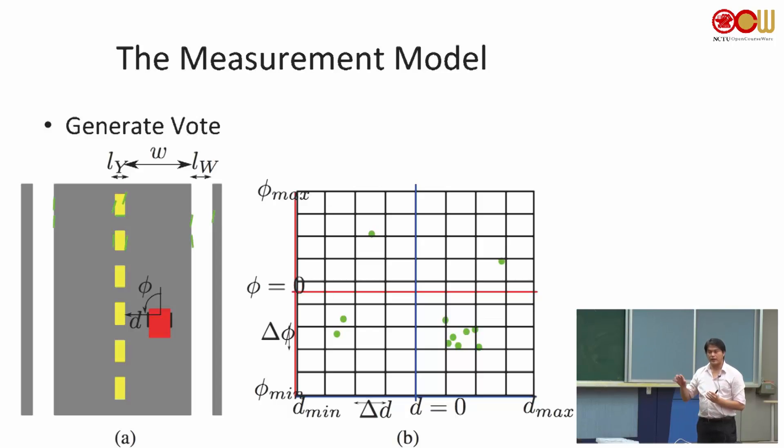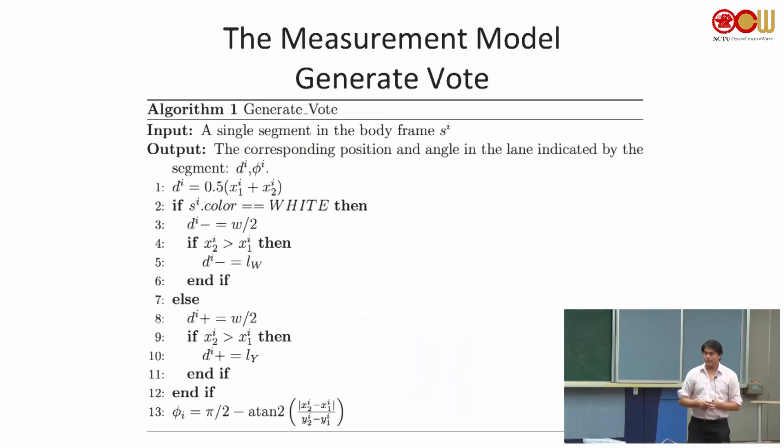So from this one, we call this measurement likelihood. So this is exactly what Daniel talked about. So we have a two-dimensional array, and if you vote some of the positions more frequently, then this will account for our lane pose. And this is the algorithm. This is just each line segment will generate one vote.